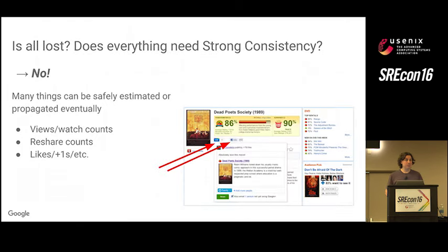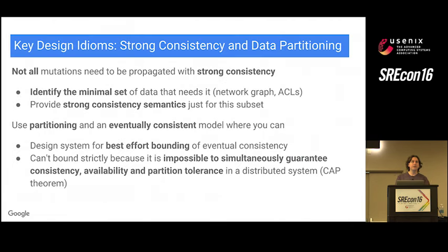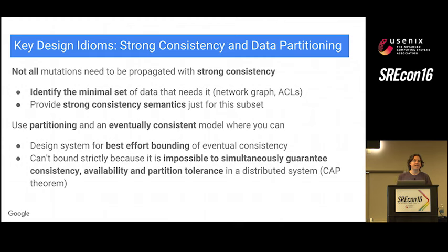Most mutations on the social graph are really unsuitable for eventual consistency — they require strong consistency. But not everything is lost. There are lots of things that can be safely estimated or propagated eventually: view counts, reshares, plus ones — these are reasonable to estimate to the right order of magnitude. Even posts themselves, if a user misses a post because it didn't replicate to a new data center, we can show it next time. The key is to understand the data and its requirements: apply strong consistency to the minimal subset that needs it, and look for opportunities to use partitioning and eventual consistency on the rest.